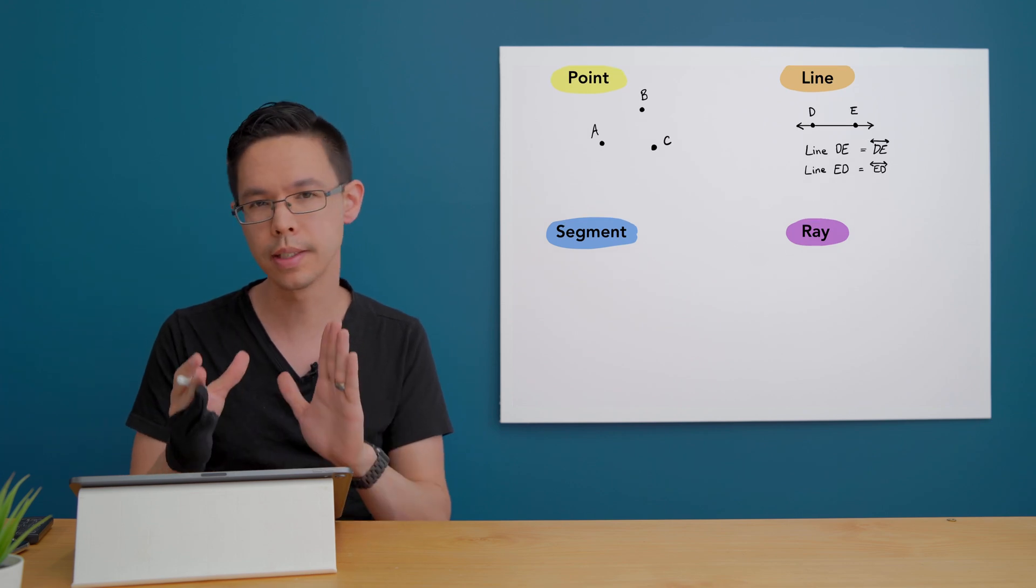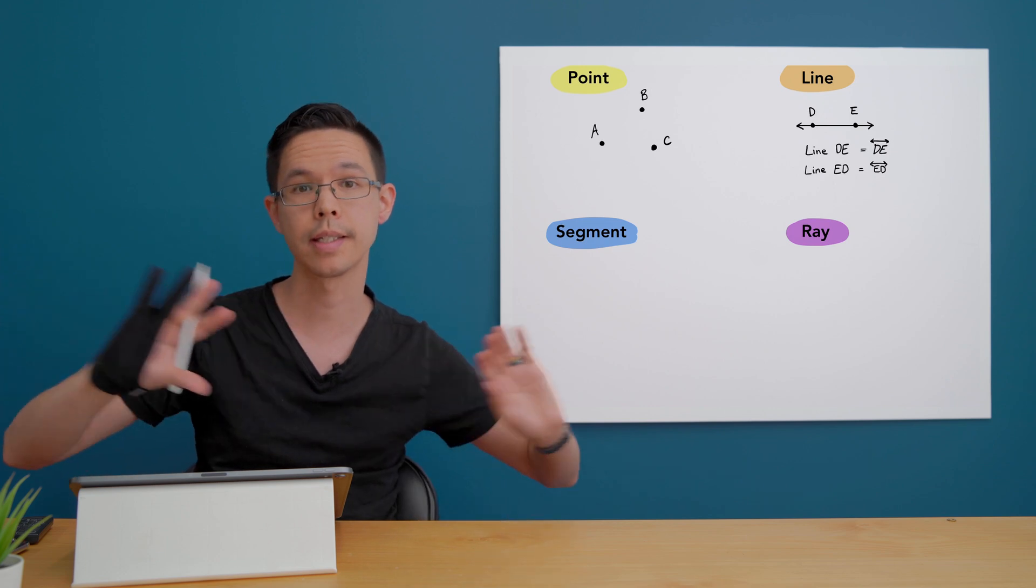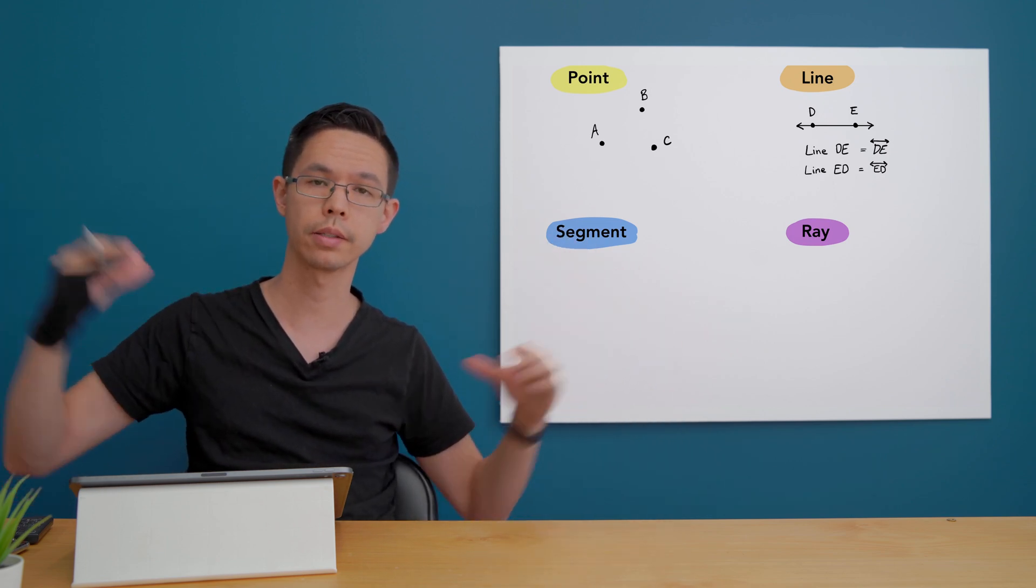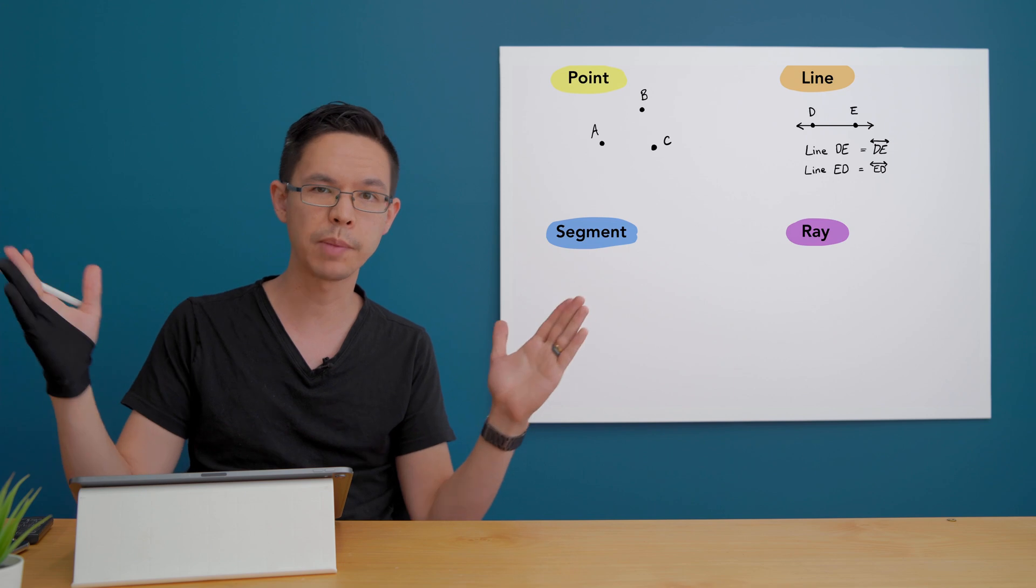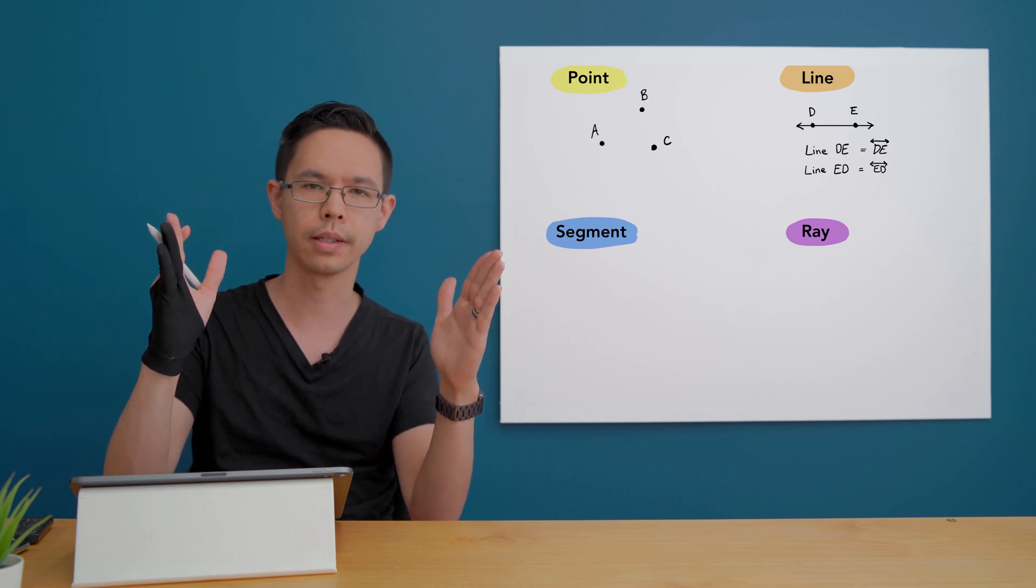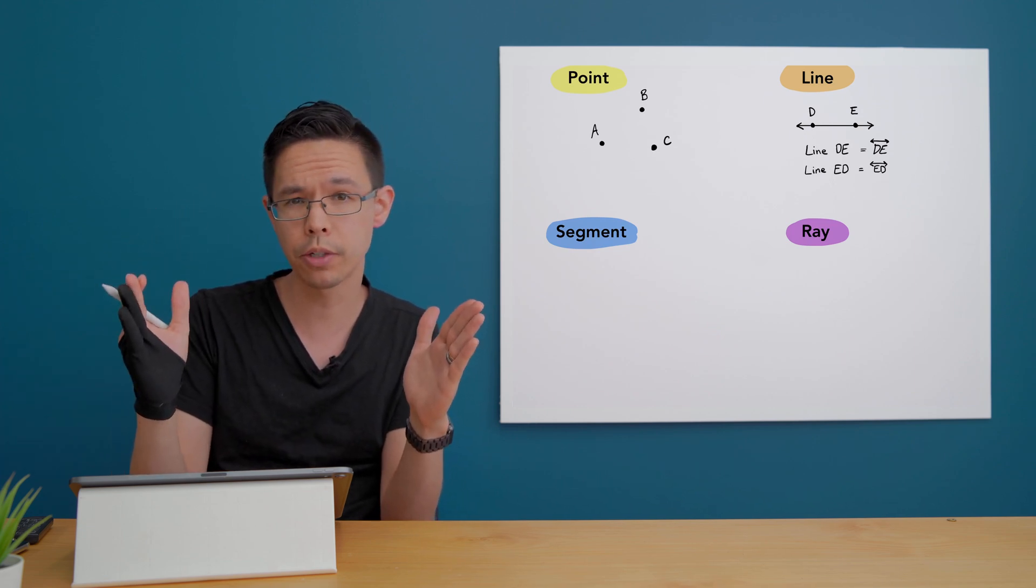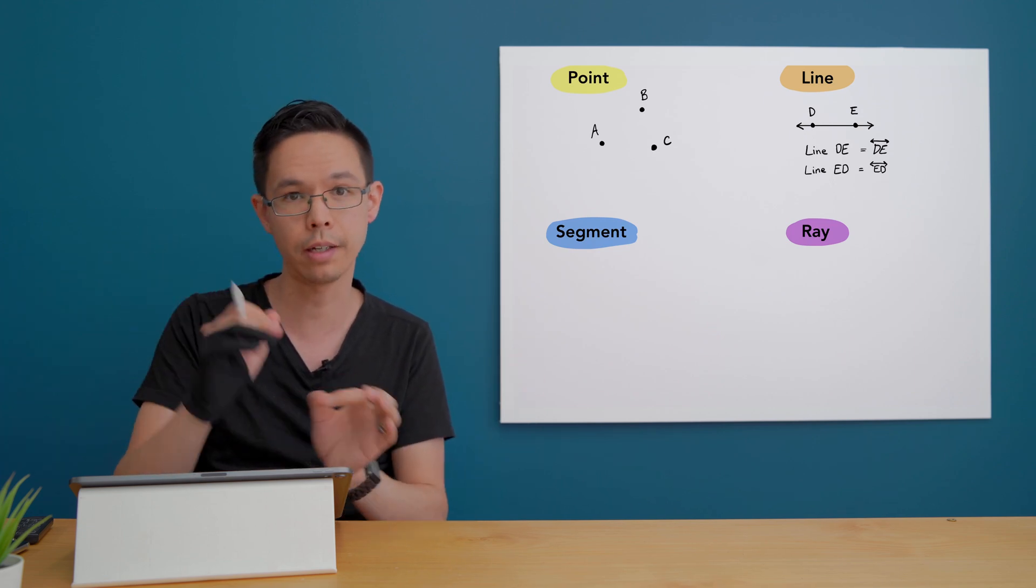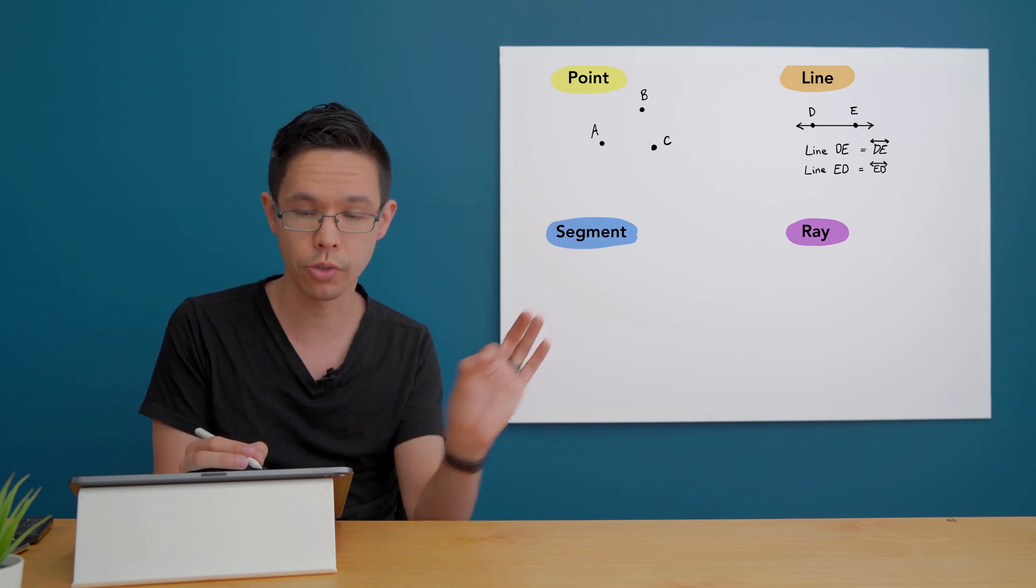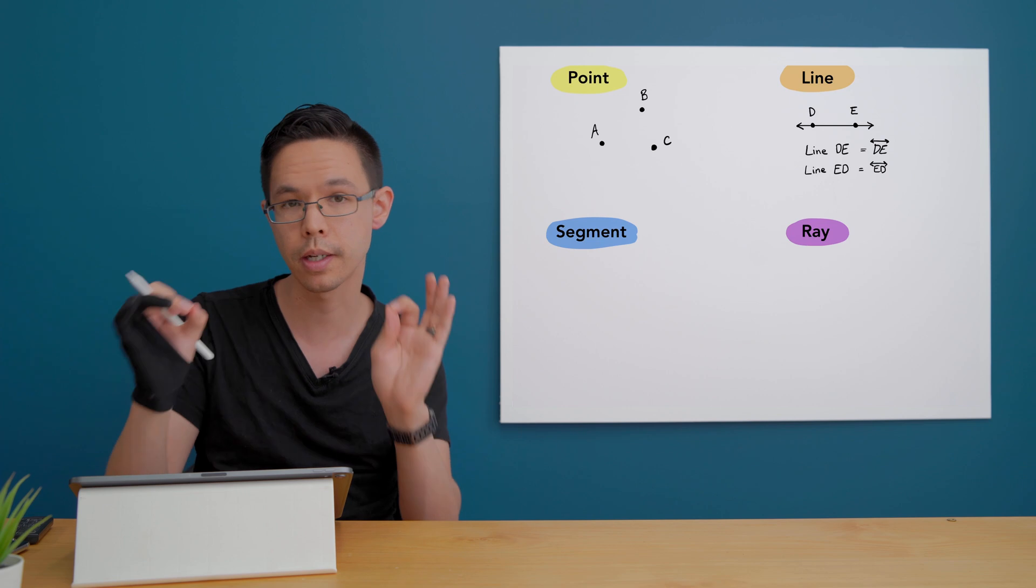A segment is part of a line. If you can imagine the line extended forever in both directions, imagine a segment is only a certain portion of it so it starts here and it ends here. We lay down the boundary by points, so it's bounded by two points, a start and an end point.